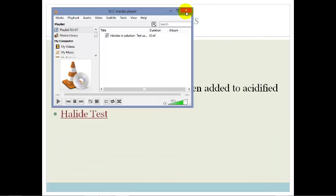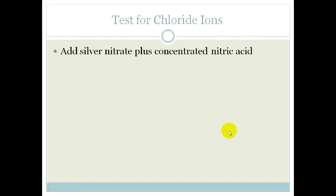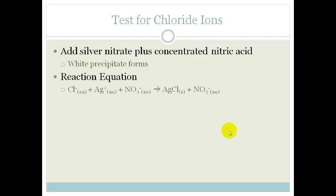So that was a halide test. Let's talk about the test for chloride ions. When we add the silver nitrate plus the concentrated nitric acid, we find that a white precipitate forms. You need to learn the colors. You need to know that if you add your silver nitrate and you get a white precipitate, you know that you've got chloride ions. The reaction equation is: chloride ions plus the silver ions from the silver nitrate form silver chloride, and we end up with the nitrate ions still in solution.